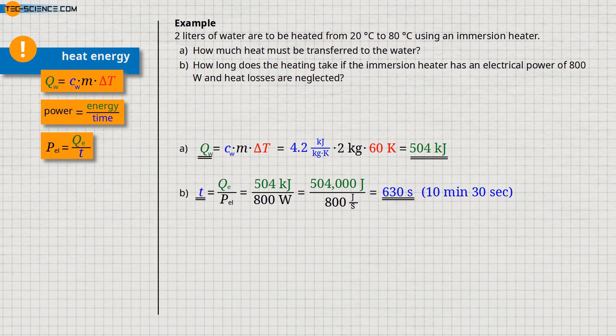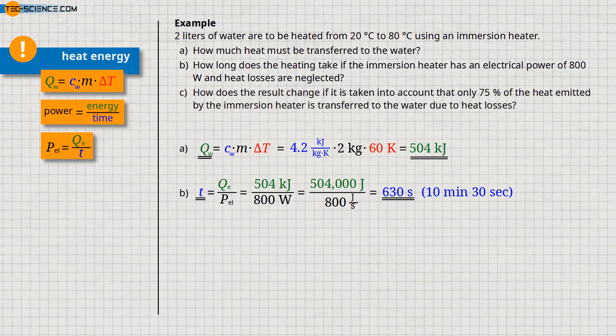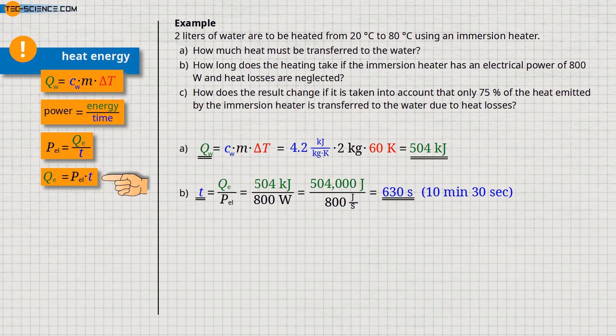However, we have neglected heat losses in this consideration. Therefore, we would like to discuss the question of how the heating time changes if, for example, only 75% of the heat generated by the immersion heater is actually absorbed by the water. Let us first take a closer look at the power of the immersion heater. The heat emitted by the immersion heater within a certain time can be determined by solving the given formula with respect to the heat Q_E.